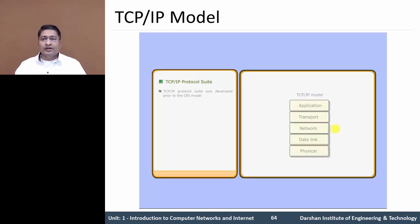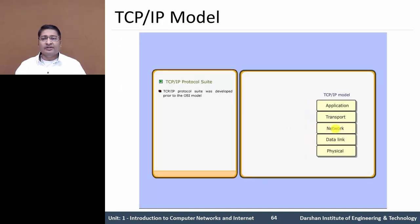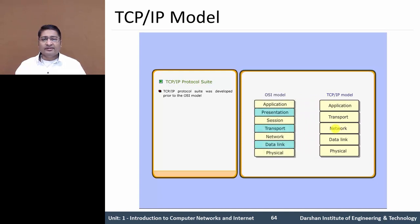In the TCP/IP model, it is developed prior to the OSI model. TCP/IP has 5 layers rather than the OSI layer model which has 7 layers, and it is not an exact equivalent to the TCP/IP model.